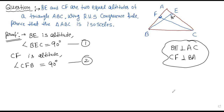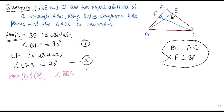I hope you are getting my point. So these are equal. From equation one and equation two, both angles are 90 degrees, so angle BEC is equal to angle CFB. We can write this as equation number three.